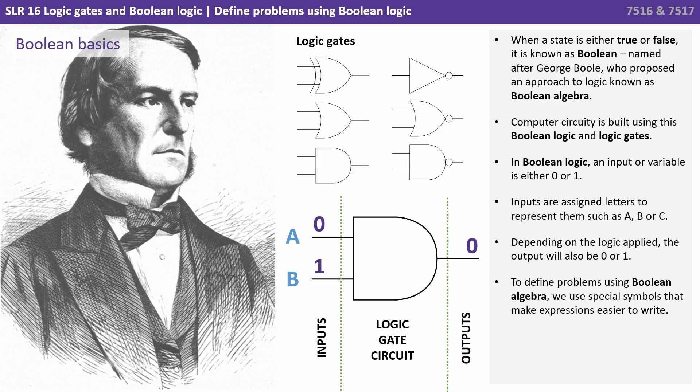Computer circuitry is built using this Boolean logic and logic gates. In Boolean logic, an input or variable is either 0 or 1. Inputs are assigned letters to represent them, such as A, B, or C. And depending on the logic applied, the output will also be 0 or 1. To define problems using Boolean algebra, we use special symbols that make expressions easier to write.